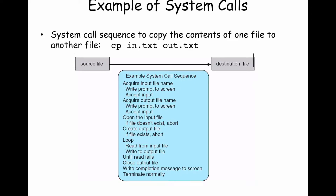The first piece of text, cp, is the program it runs — it looks somewhere in the file system, creates a process, and runs that program. The second and third pieces of text are the parameters — what this program is going to operate on. In.txt is the name of the source file for the copy, and out.txt is the destination. This program takes the contents of in.txt and copies it to out.txt. You can specify full paths if the files are in different directories.